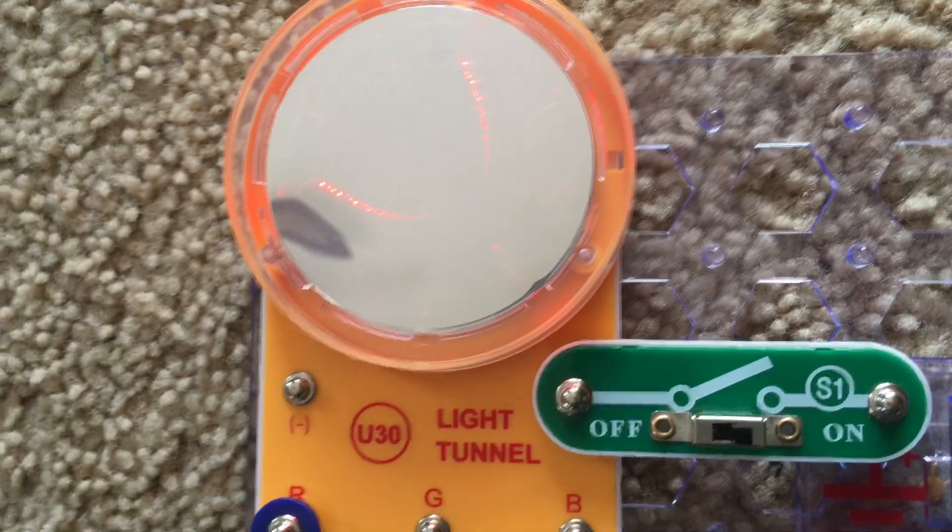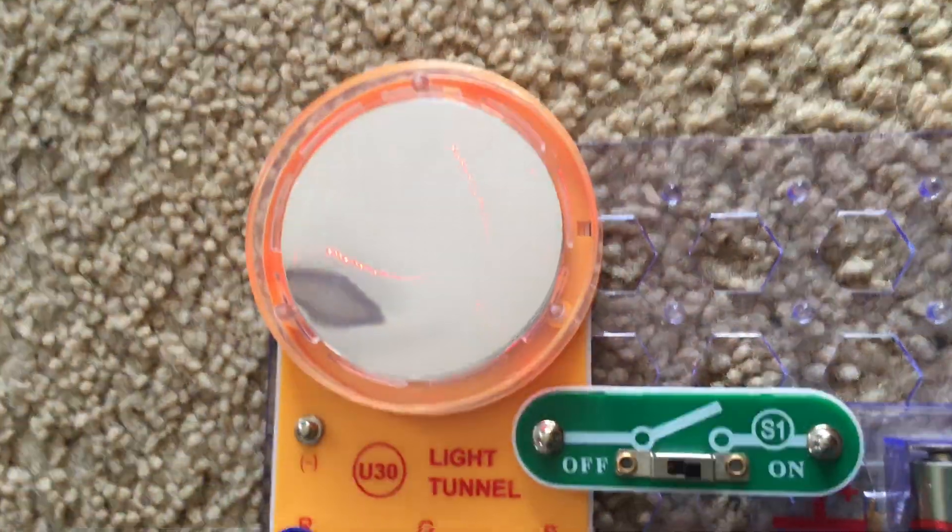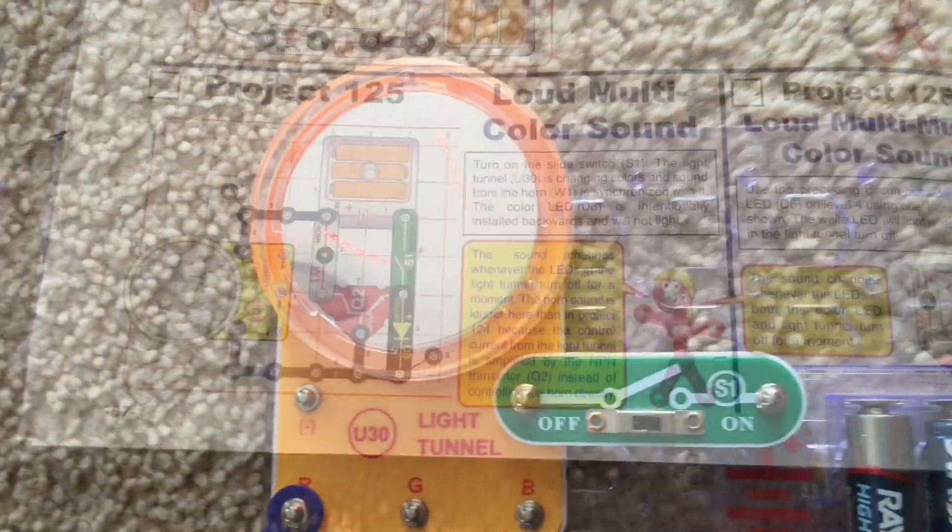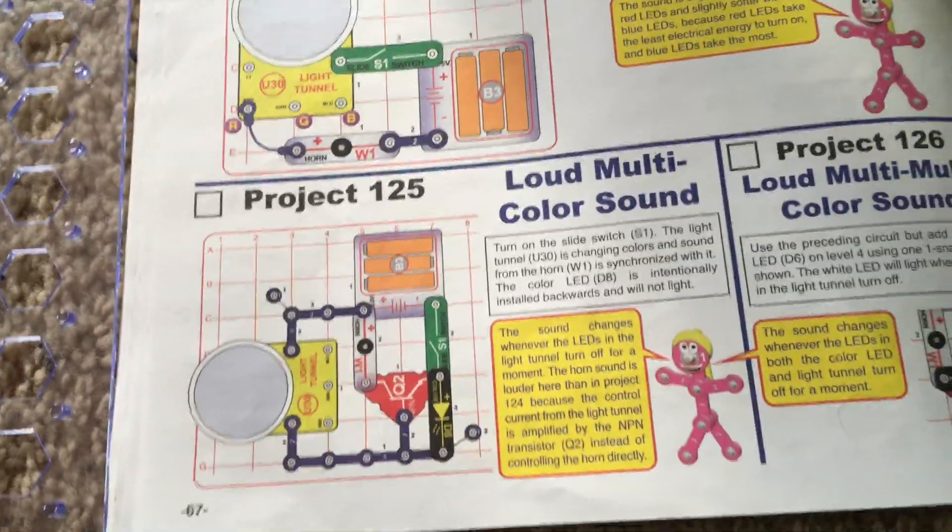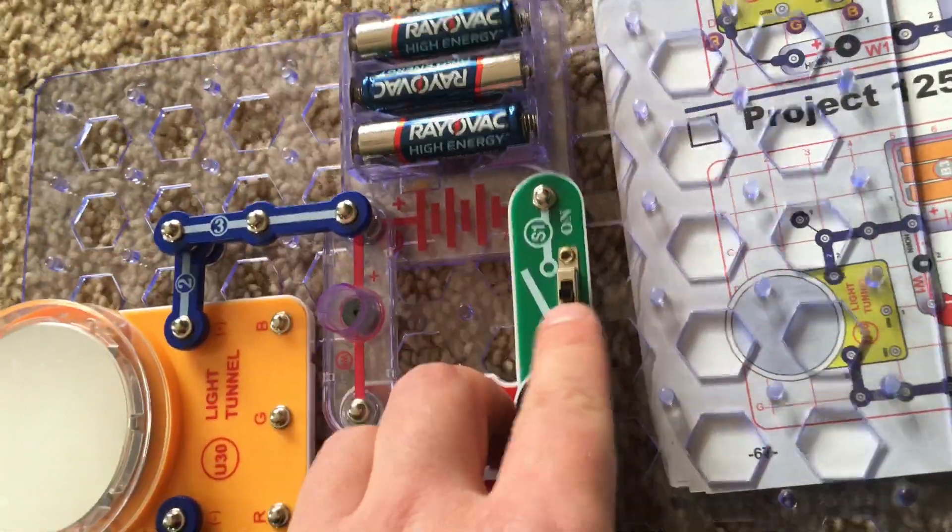For best effects, use new batteries and dim the room lights. Project 125, loud multicolor sound. Turn on the slide switch. Volume warning.